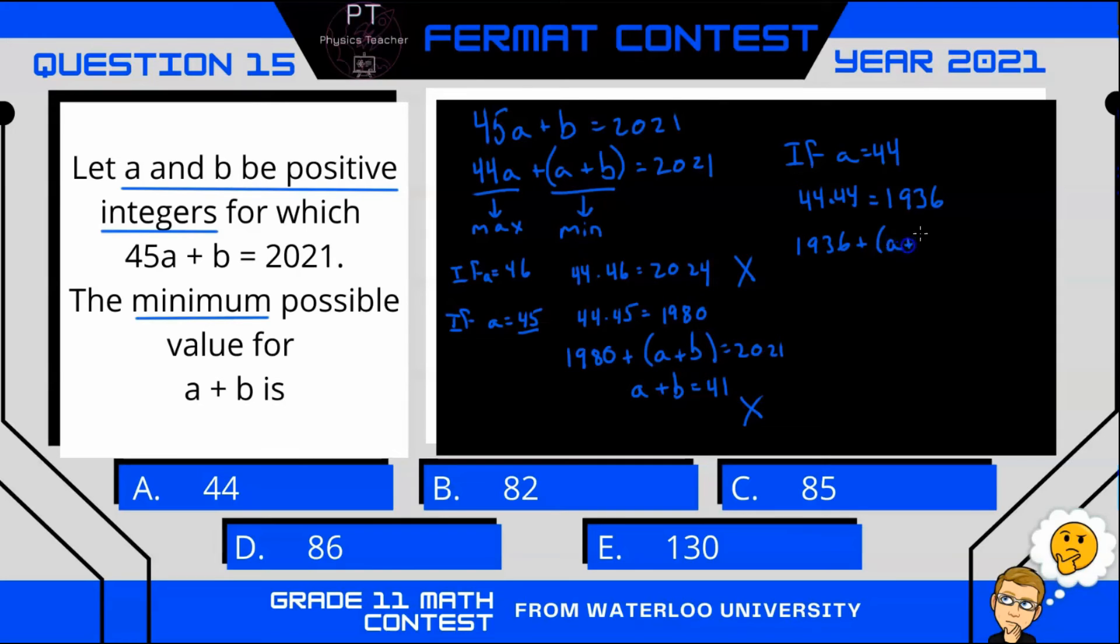So this equation then becomes 1936 plus a + b equals 2021. If I bring 1936 to the other side, we end up with a + b equals 2021 minus 1936, which equals 85. That's going to work because if a is 44, that means b would be a positive integer to add up to 85. So the minimum possible value for a + b is C: 85.